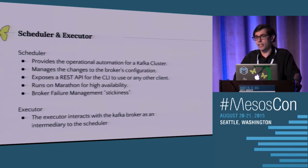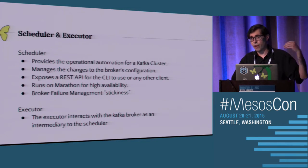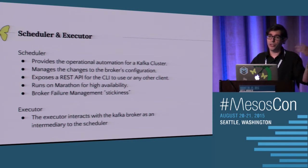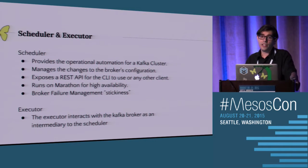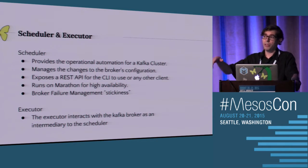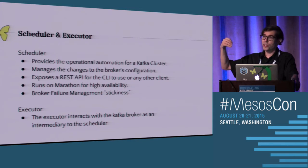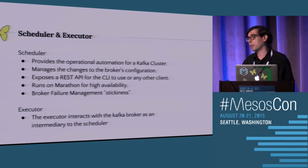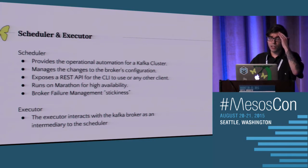The executor is about 16 lines of code - not quite, but almost. Really all it does is take the information from the launch task. When we build a scheduler and launch a task, there's a data field in the task protobuf that we populate, and we extract that in the executor. So the executor gets started, pulls out the data the scheduler sent - all the configuration information it needs to launch and start the application.